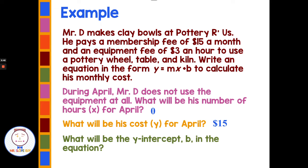What will the y-intercept, or b, be in this equation? Y-intercepts are things that happen once — not things that happen repeatedly like slope, but things that happen one time: your initial fee, your beginning amount. In this case, it's that membership fee of $15 for the month. So $15 is our y-intercept.